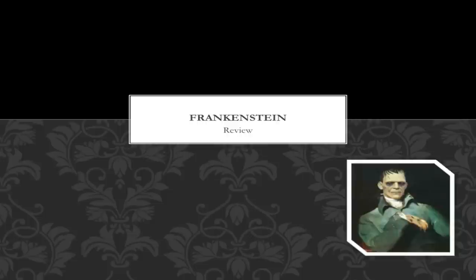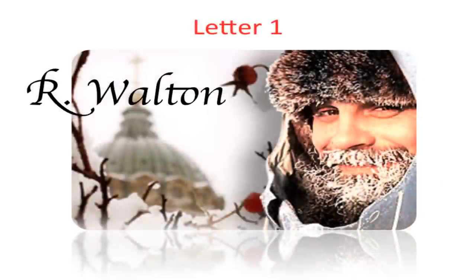So it starts off with the letters, and we have this guy named R. Walton. He's a character that appears in the beginning, but then Mary Shelley takes him away from us just a few pages later. We don't even see him again until the end of the novel. So why introduce a character and then take him away? Did she change characters all of a sudden?